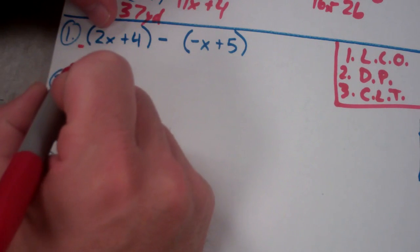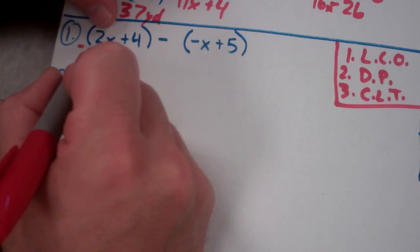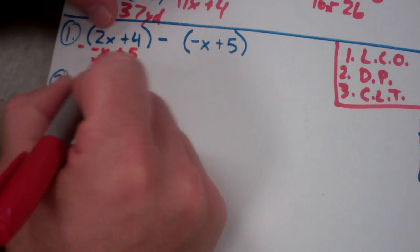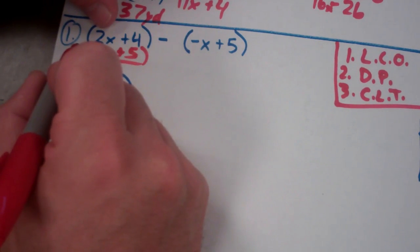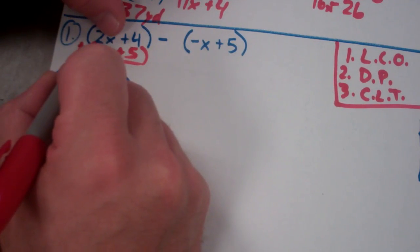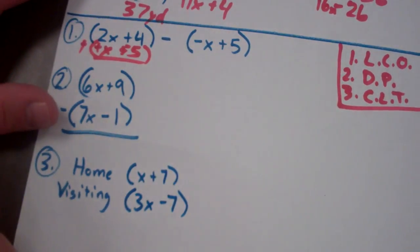You can put it vertically, minus the opposite of x plus 5. But I like to do then leave change opposite. So leave, change it to addition, and then change the opposite of everything. That'd be a positive x and a negative 5, right?